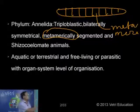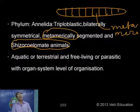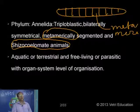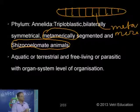Under the true coelomate groups we have one — schizocoelom — and another one, enterocoelom. This is based on the nature of the development of the coelom. We have Echinodermata and Chordata coming under enterocoelom. And Annelida, Arthropoda, Mollusca are coming under schizocoelom. The coelom is normally developed by the splitting of mesoderm, and that is why it is called schizocoelom.